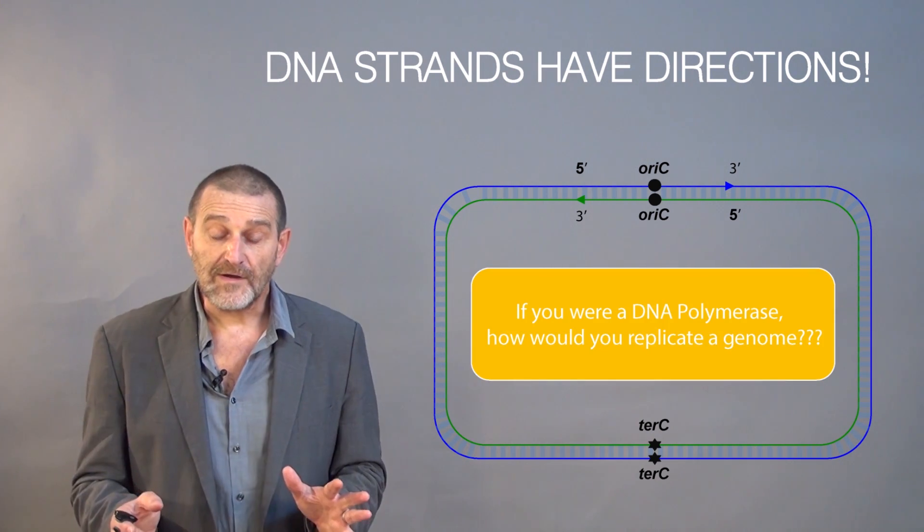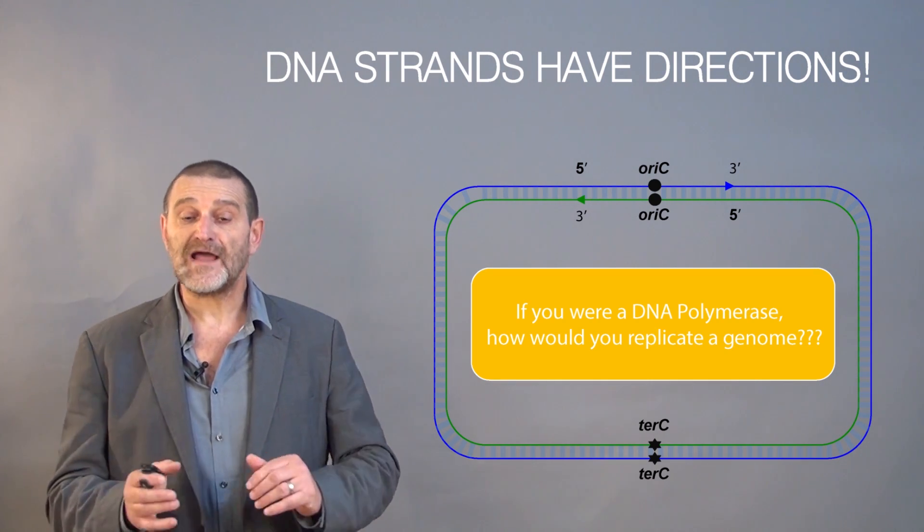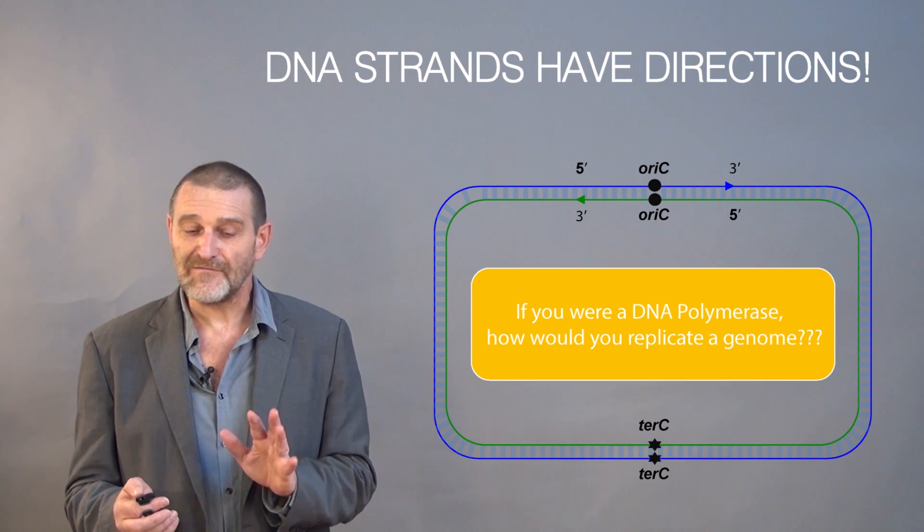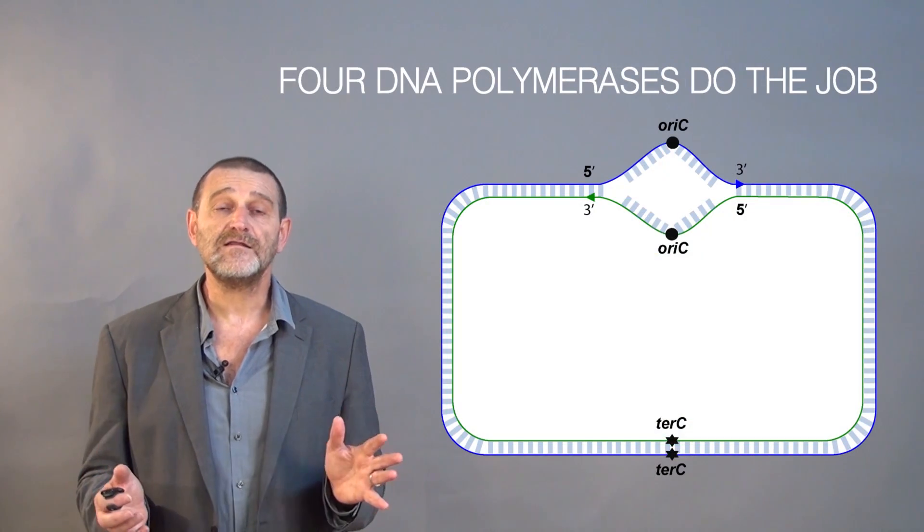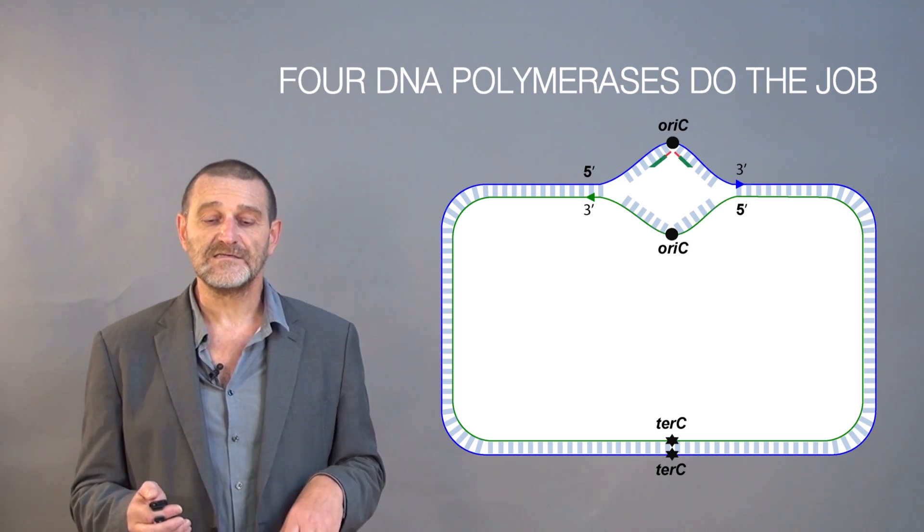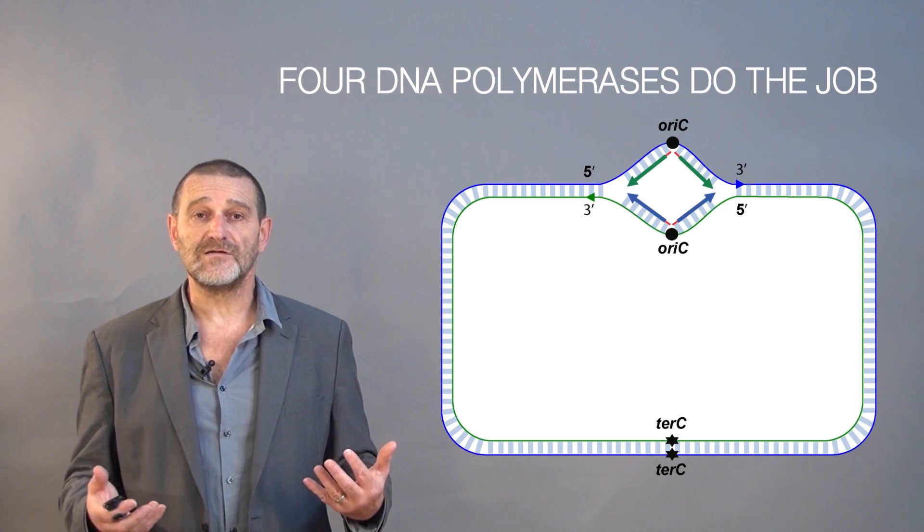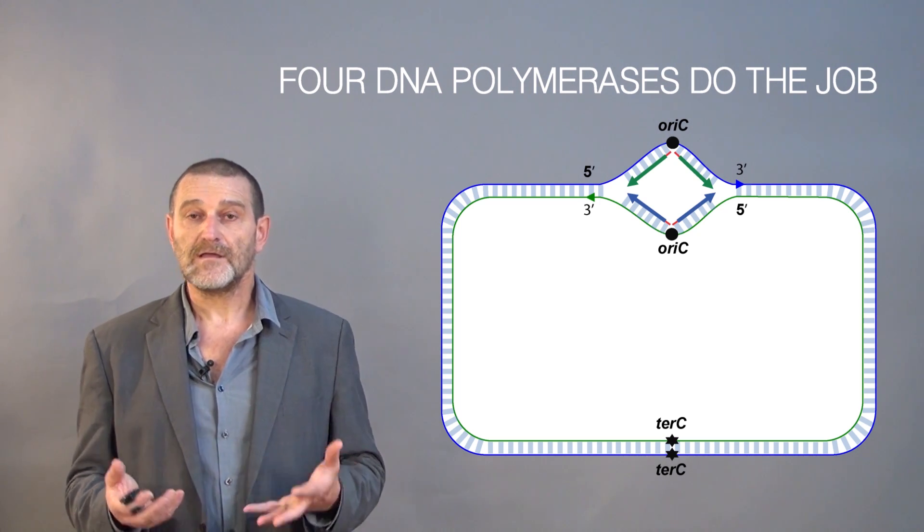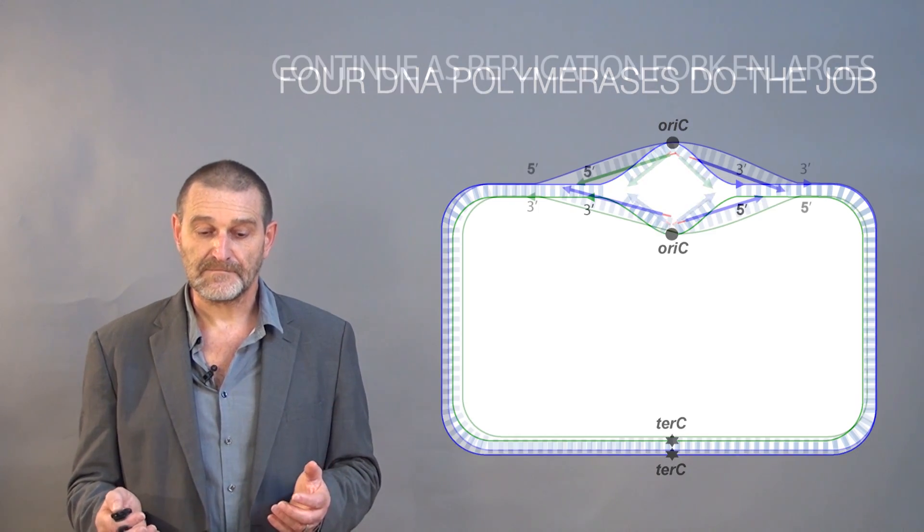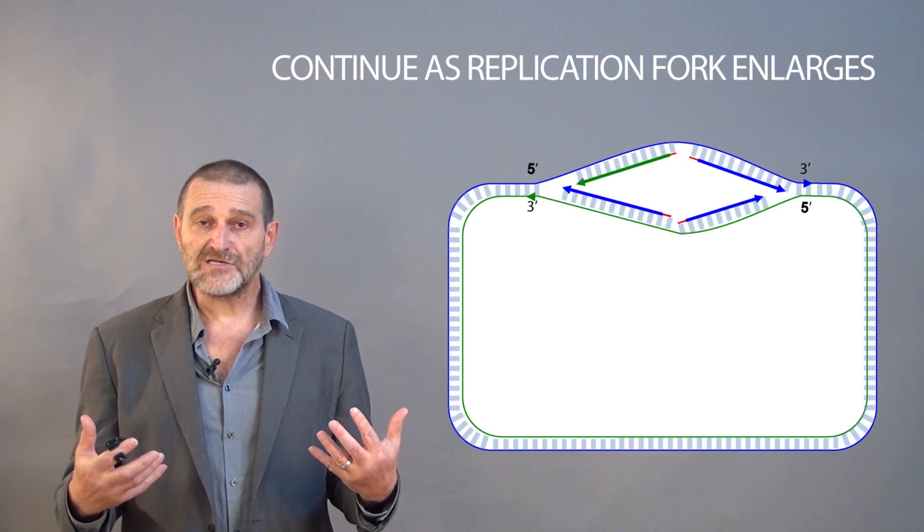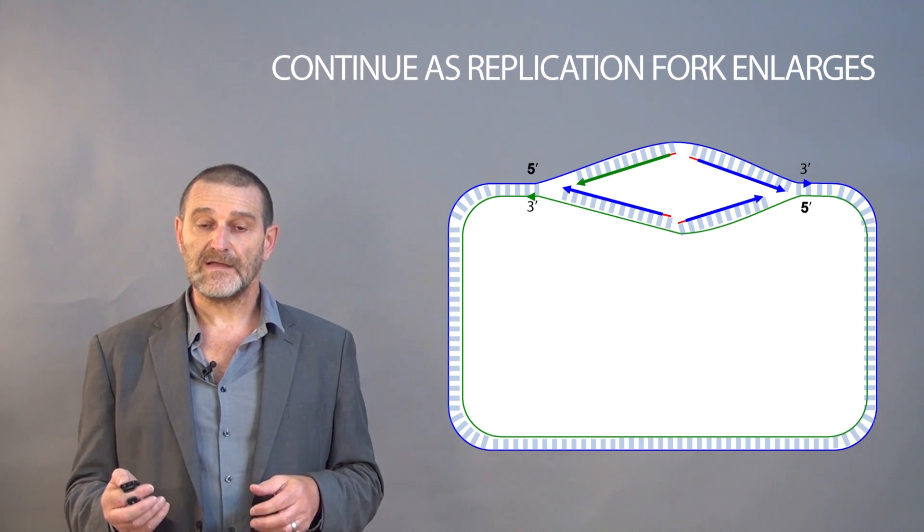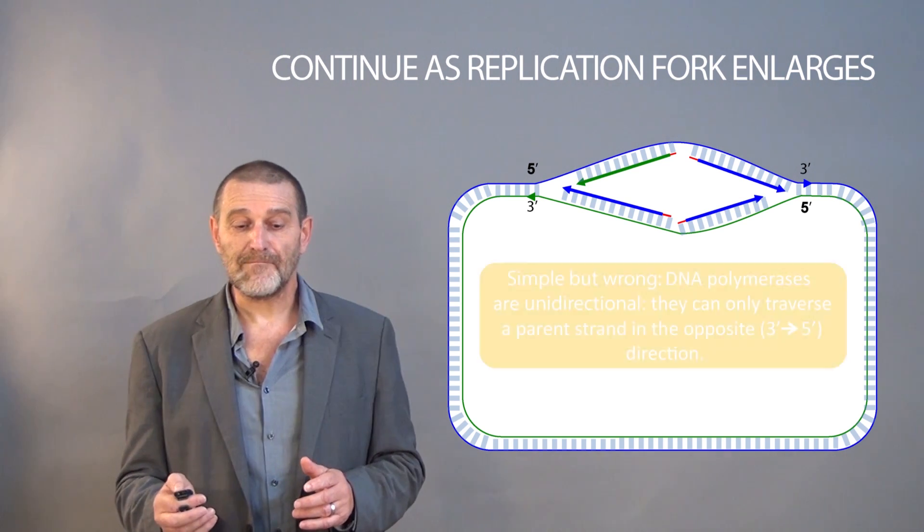If you were a DNA polymerase, how would you replicate a genome? If I was a DNA polymerase, I would do something very simple. I would wait until DNA unwinds a little bit, recruit four DNA polymerases, and move them along the genome trying to replicate it. It looks like just four DNA polymerases are enough to replicate the whole genome. When the replication fork enlarges, I continue my replication process. This is simple but completely wrong.